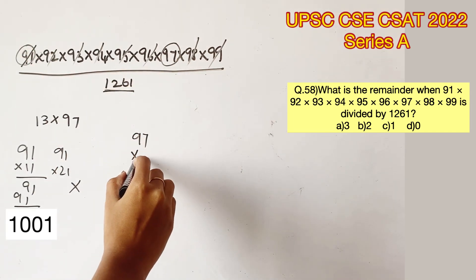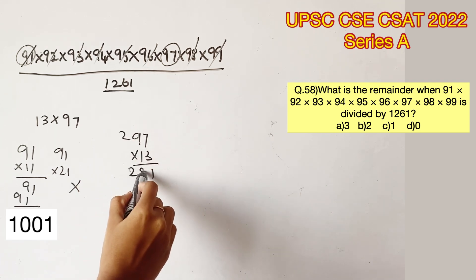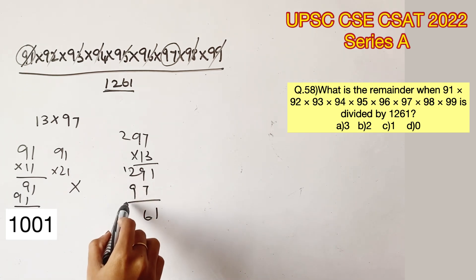So let's check with 97. For 7 to become 1, the units place should be occupied by 3, right? So 7, 3s are 21. If you check with 13, you will get 97 into 13 is equal to 1261.